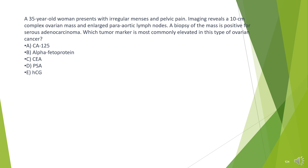A 35-year-old woman presents with irregular menses and pelvic pain. Imaging reveals a 10-centimeter complex ovarian mass and enlarged para-aortic lymph nodes. A biopsy of the mass is positive for serous adenocarcinoma. Which tumor marker is most commonly elevated in this type of ovarian cancer?